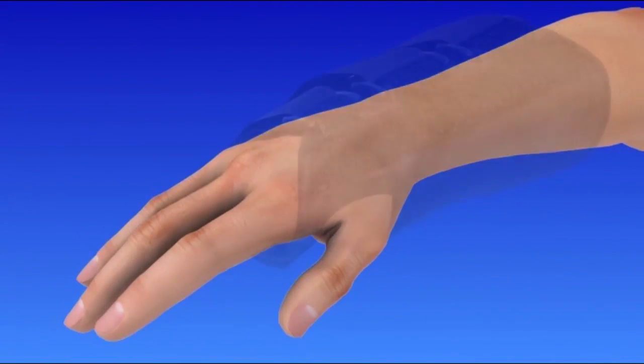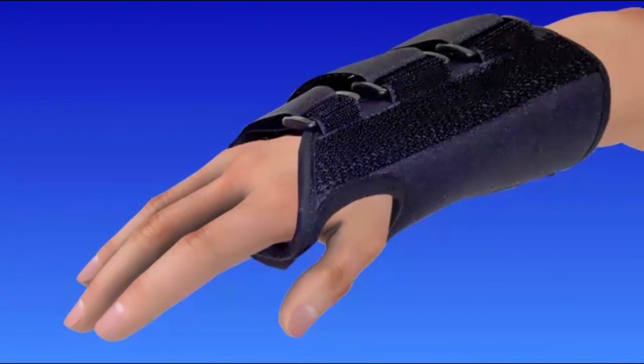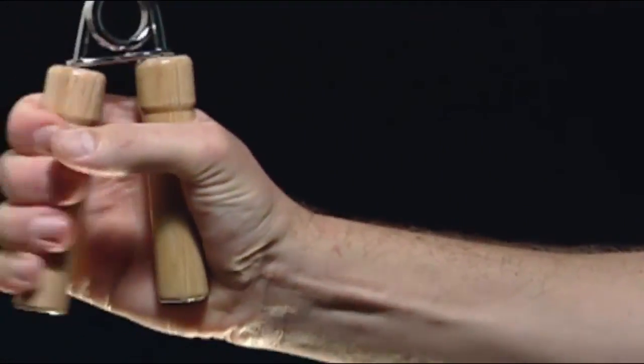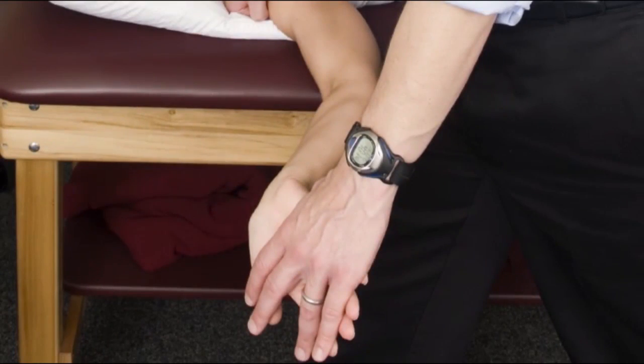A cast or splint is worn following surgery. You can participate in therapy to regain the use of your hand. When this begins depends on your fracture and the procedure.